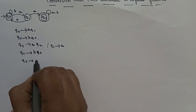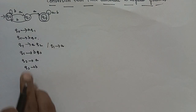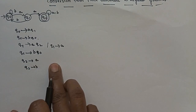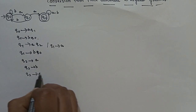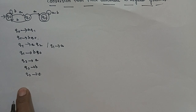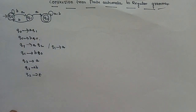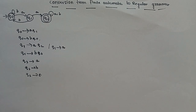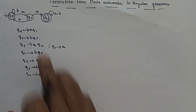So we have to write: Q2 goes to A, Q2 goes to B. Q2 on 'a' goes to some final state, Q2 on 'b' goes to some final state. Q2 goes to Epsilon — so this is the final state. Now we have to construct the set of production rules for the regular grammar.